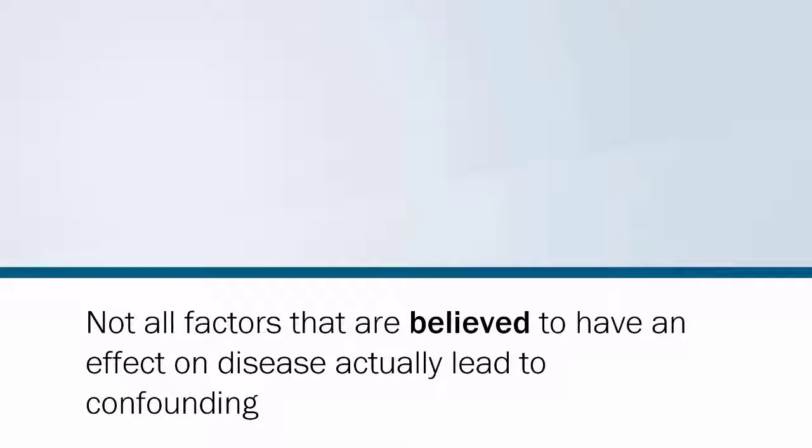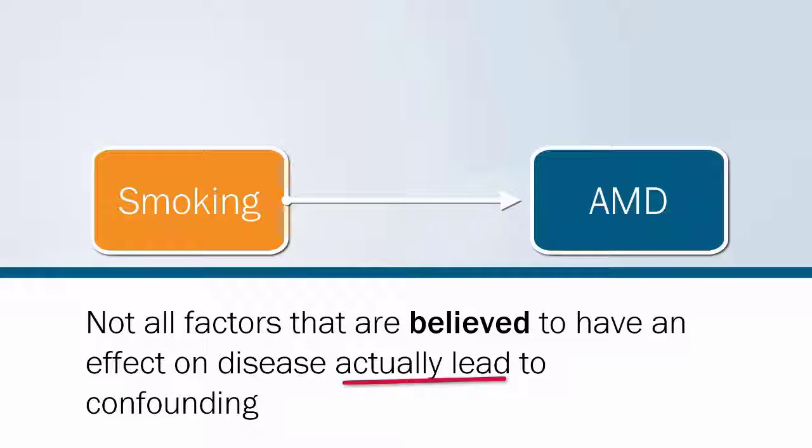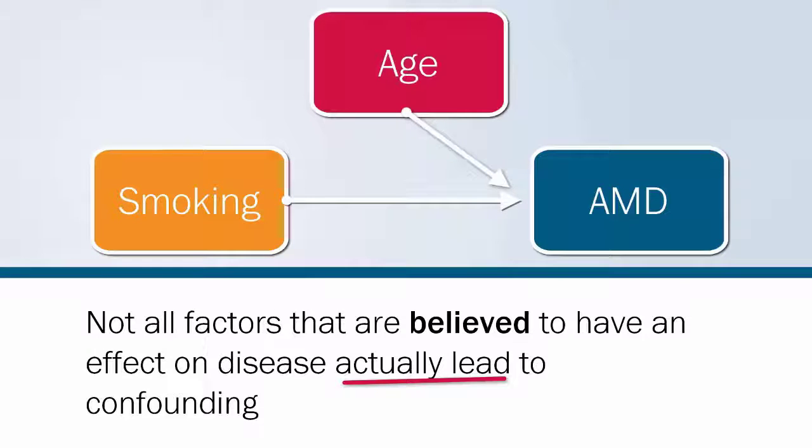Not all factors that are believed to have an effect on disease actually lead to confounding. Sometimes the exposures can be correlated as in our example, but not always. For example, if we are looking at smoking and AMD, age is not correlated with smoking, but it is a confounder.